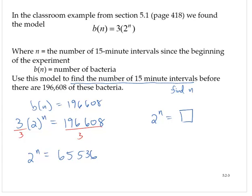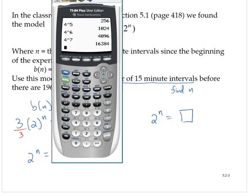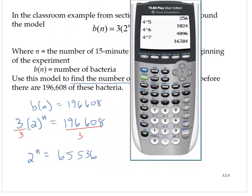Now we need to use a calculator to find this value of n, using a little bit of trial and error. Let's try 2^10. That gives us 1,024.